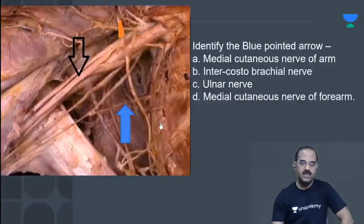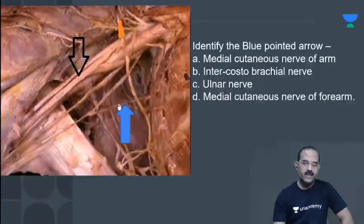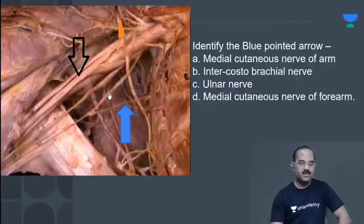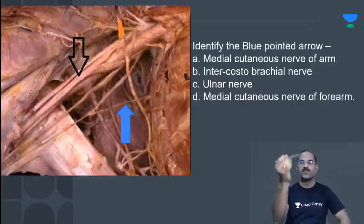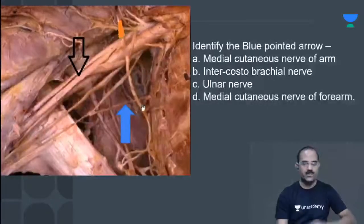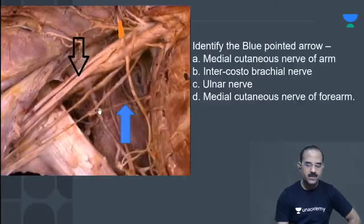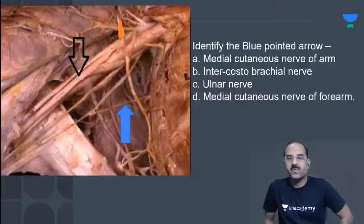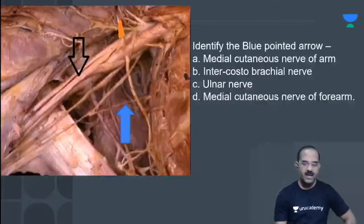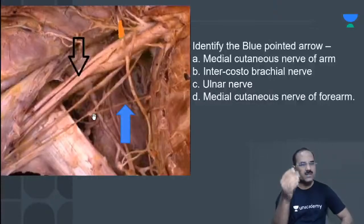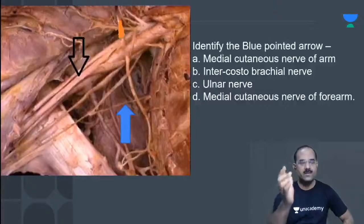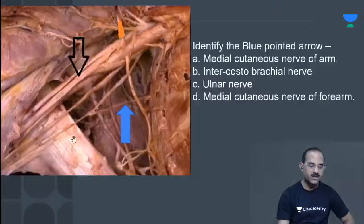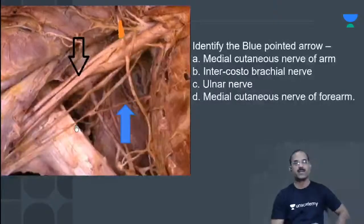This is lateral, this is medial. A nerve is coming from the thorax and joining this nerve — that is the medial cutaneous nerve of arm, joined by a branch of the second intercostal nerve. That branch is the intercostal brachial nerve — 'intercostal' plus 'brachium' (arm). It is a branch of the second intercostal nerve joining the medial cutaneous nerve of arm.